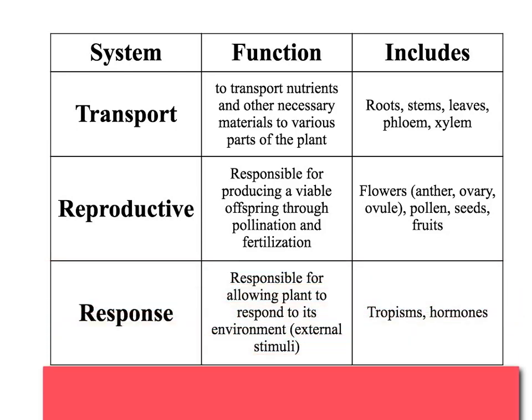The last system is the response system. It is responsible for allowing the plant to respond to its environment or external stimuli. A stimulus could be water, a flood, cold weather, sunlight, a touch — a variety of different things. It includes the tropisms we've talked about and the hormones we discussed that allow for these things to happen. This whole system reminds us that plants are living organisms that respond to stimuli just like we do, and they have hormones that stimulate growth and changes in the organism at different times.